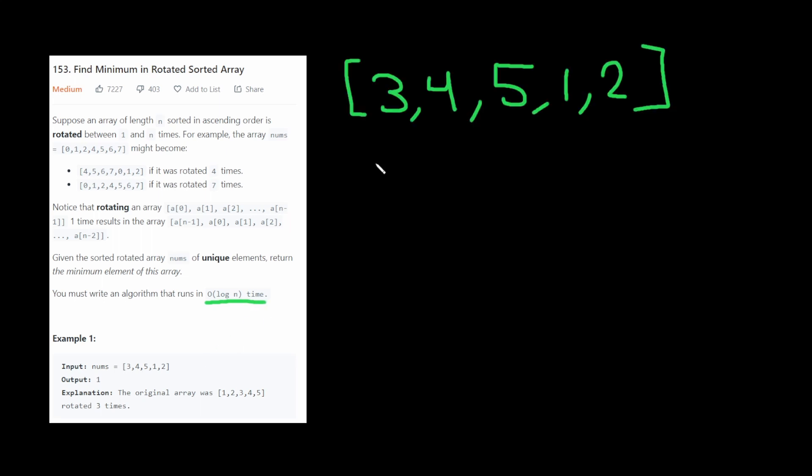So the O of n algorithm would be to go through this array, check each element, and check if that element is less than the minimum, and set minimum to be that element if so, and then return minimum. We can't do that because they're asking specifically for O of log n time.